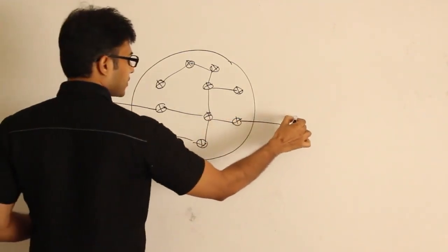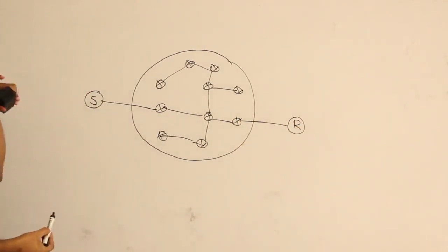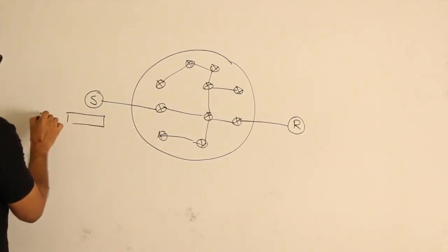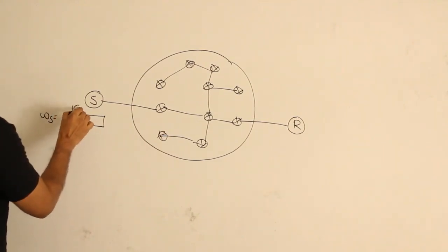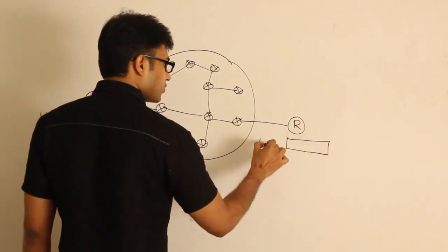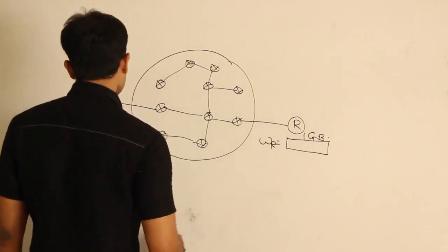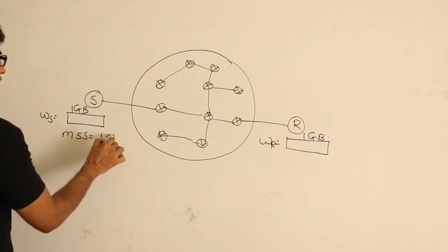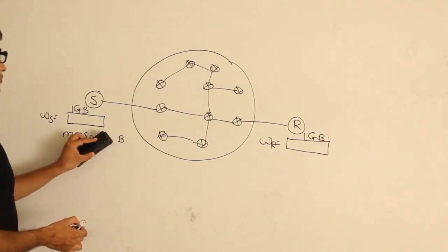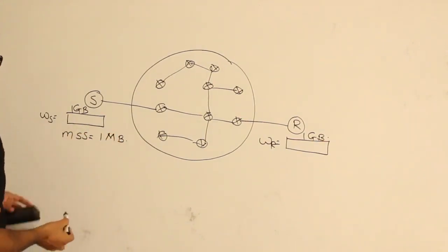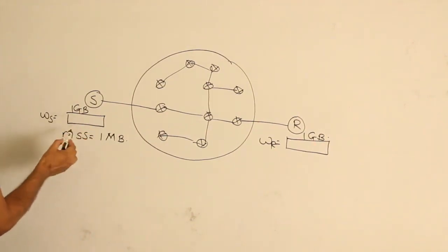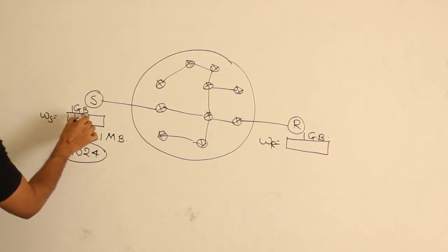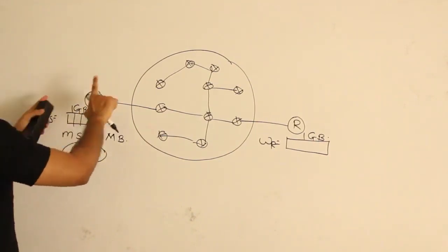Let's say there is a sender and a receiver. Assume that the receiver has said the sender can send 1 GB of data in the advertisement window, so the sender window size is set to 1 GB because the receiver said it has a capacity to receive 1 GB. Assume MSS (maximum segment size) is 1 MB. Then the sender can send 1024 segments in its window and send all of them at once to the receiver.